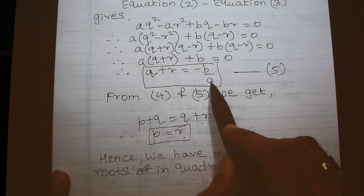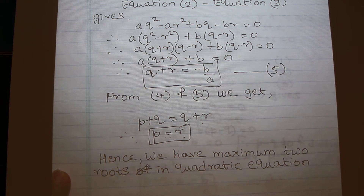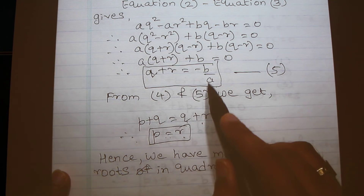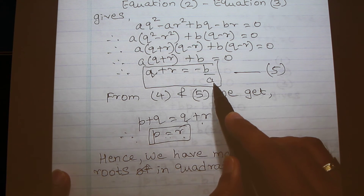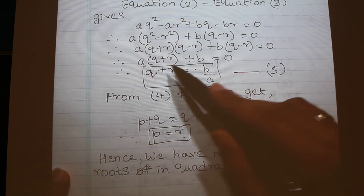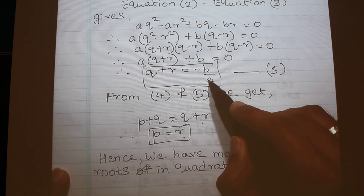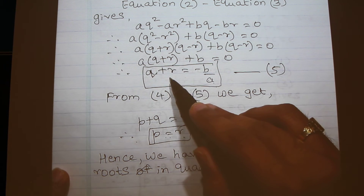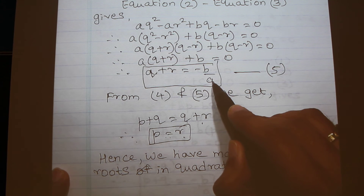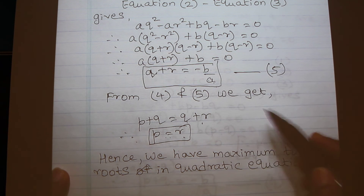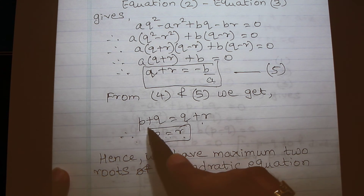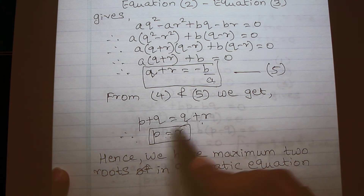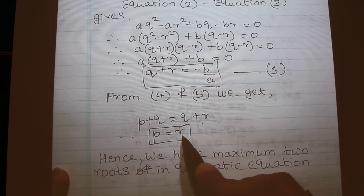Dividing by (q − r) is valid because q − r ≠ 0, and we get q + r = −b/a as well. Note: when we did p + q we got −b/a, and when we did q + r we got −b/a. We can divide both sides by a because a ≠ 0 by the definition of quadratic equation. So from equations 4 and 5 we get p + q = q + r, which means p = r.